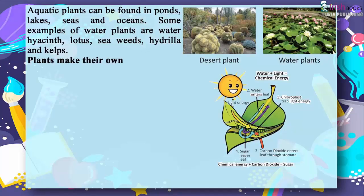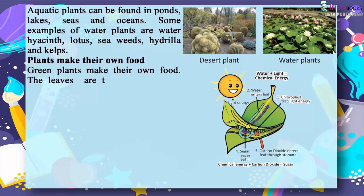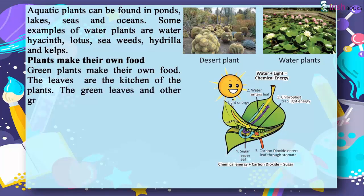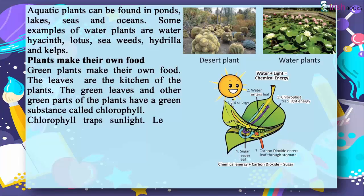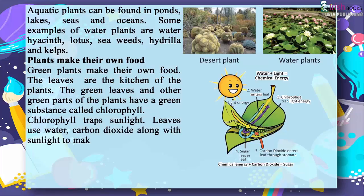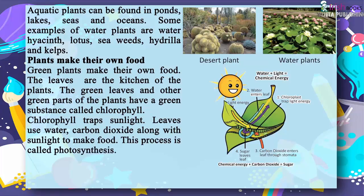Plants make their own food. The leaves are the kitchen of the plants. The green leaves and other green parts of the plants have a green substance called chlorophyll. Chlorophyll traps sunlight. Leaves use water and carbon dioxide along with sunlight to make food. This process is called photosynthesis.